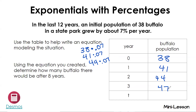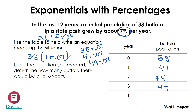Let's write an equation for how we went about solving that. What was our initial population? 38. Are we adding or subtracting — increasing or decreasing? We're adding, so we're going to use 1 plus our rate. Our rate is 7%, which is 0.07. We raise it to the t power depending on the year. Using the equation we just created, how many buffalo will there be after eight years? Plug t = 8 into your equation — practice typing it into your calculator.